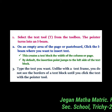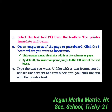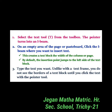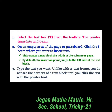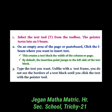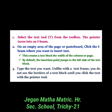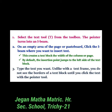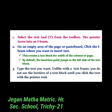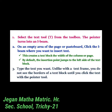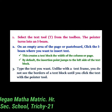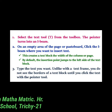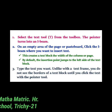On an empty area of the page or paste board, click the eye beam where you want to insert the text. This creates a text block, and by default the insertion point jumps to the left side of the text block. Then type the text you want. Unlike with a frame, you do not see the border of a text block until you click it with the pointer tool.